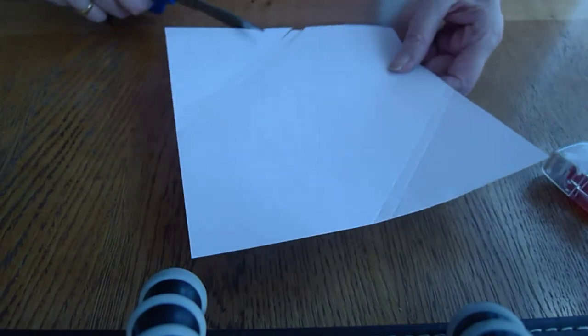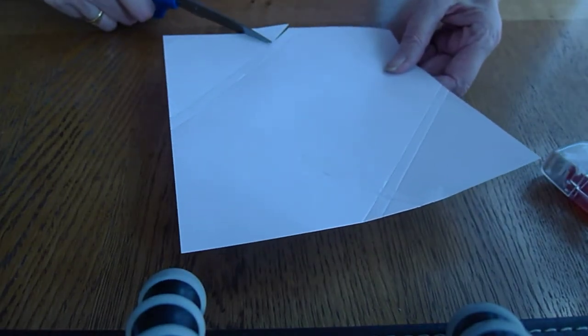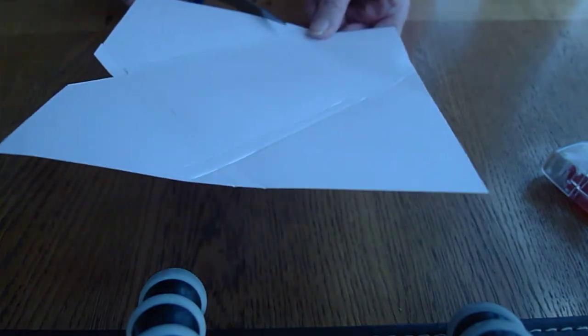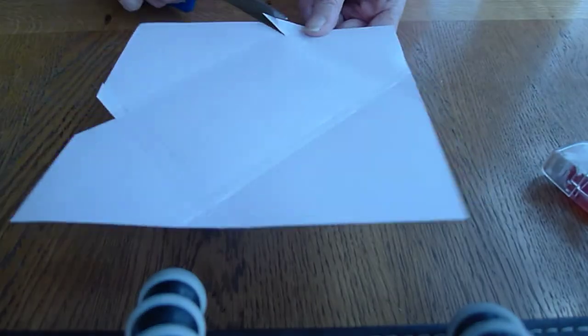So there goes the triangle, and then I've got my little tab that I'm going to stick underneath. And I do exactly the same on the opposite side. So this is going to be the bottom of my card.